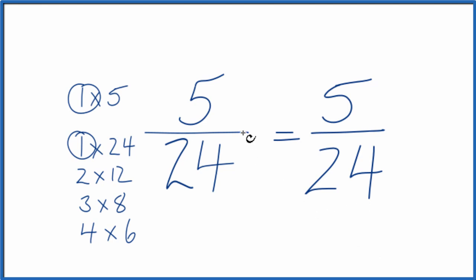What that means is that the fraction 5 24ths, 5 over 24, is already simplified. It's been reduced to its lowest terms.